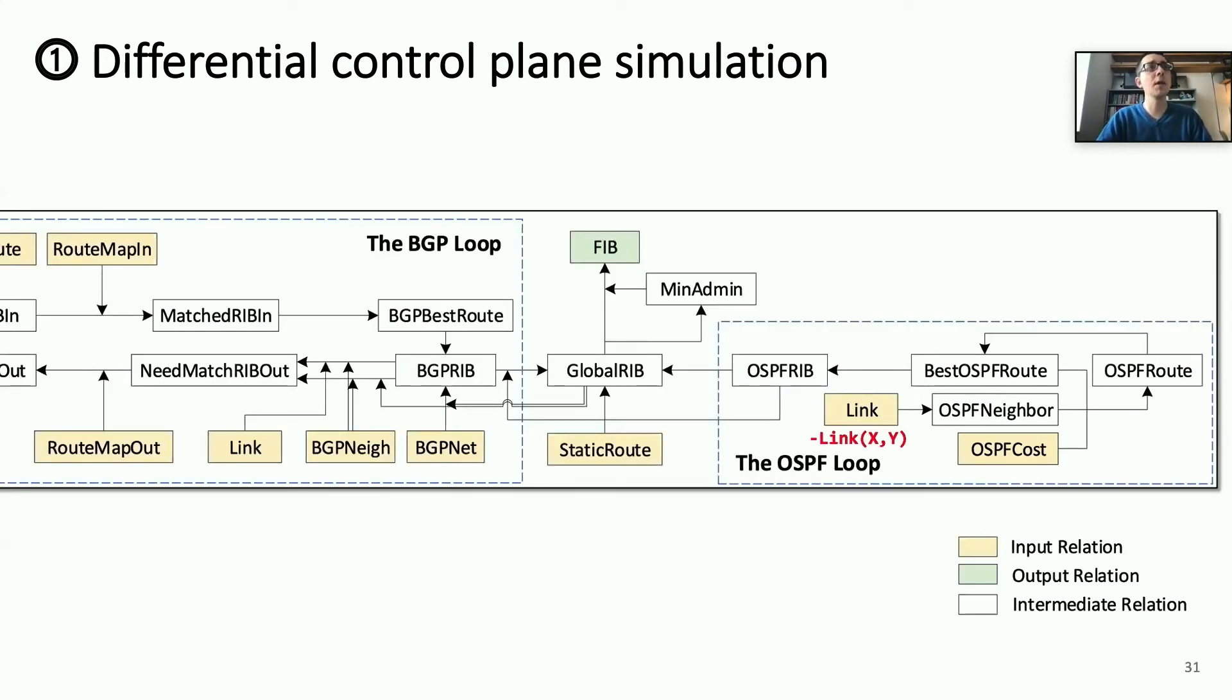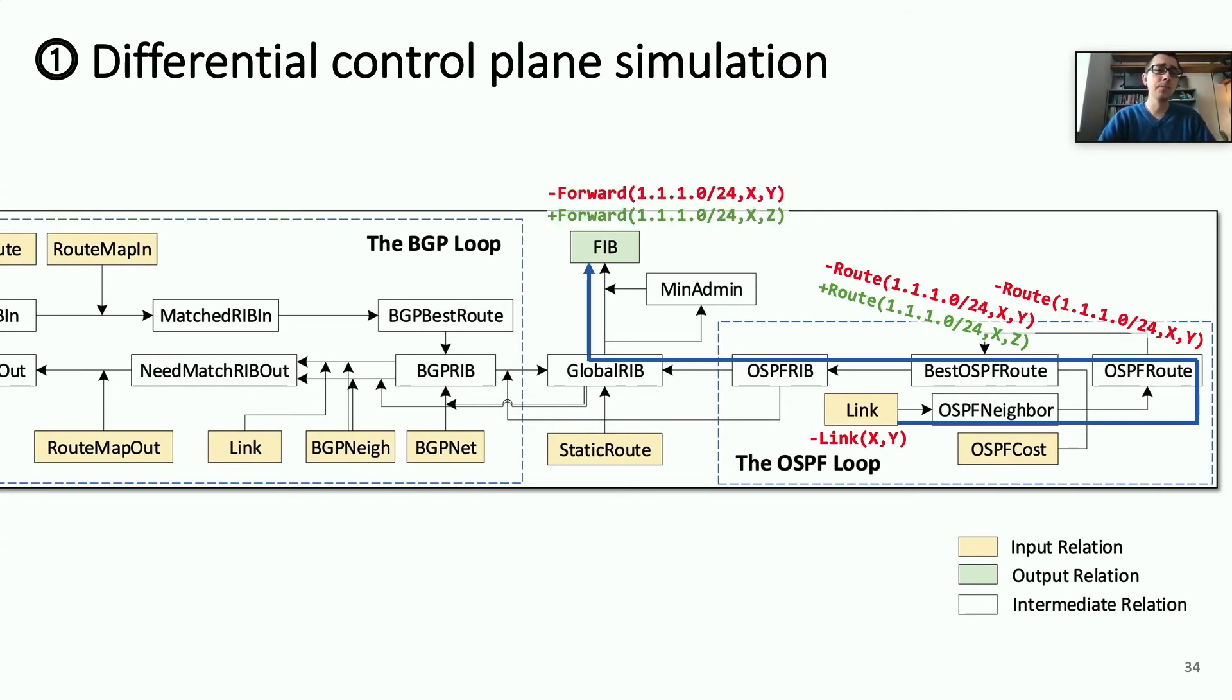To understand a little bit more how this works, let's take an example. So, here I've shown the primary relations that exist in DNA's model expressed in DD log. And so, links in the state of those links is one of our input relations or tables of input. And so, if we remove a link, DD log is automatically going to determine that this results in a change in OSPF routes and remove the corresponding route from the OSPF route table. Furthermore, it'll determine that removing this route from the set of choices means a new best route has to be selected. And so, the old best route will be removed and a new best route will be added to the best OSPF route table. This process will continue until eventually, in our final set of outputs, we observe that there is a forwarding rule that gets removed and a new forwarding rule that gets added to accommodate for this link change.